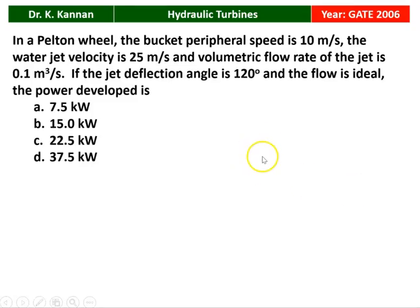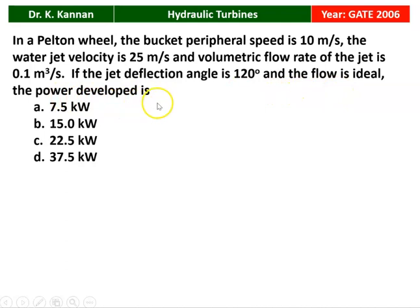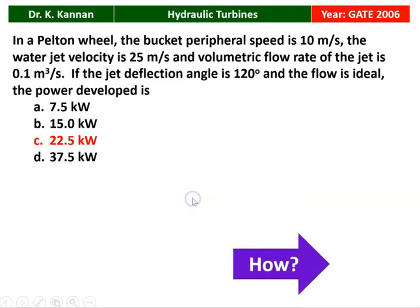The first question is from the GATE 2006 Question Paper. In a Pelton wheel, the bucket peripheral speed is 10 meters per second, the water jet velocity is 25 meters per second, and the volumetric flow rate of the jet is 0.1 cubic meters per second. If the jet deflection angle is 120 degrees and the flow is ideal, the power developed by the Pelton wheel is 22.5 kilowatts.